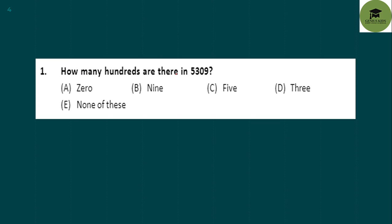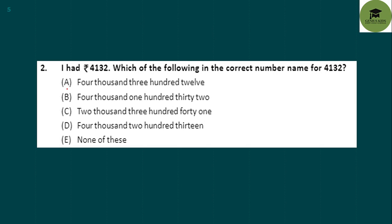First question: How many hundreds are there in 5309? In 5309, there are three hundreds, so the answer is option D. Next question: I had rupees 4132. Which one of the following is the correct number name for 4132? The answer is option B.